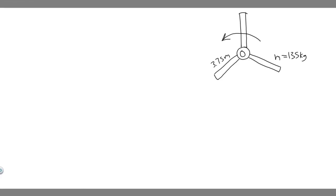In this problem, we're told a helicopter rotor blade can be considered a long, thin rod, as shown in this figure. Part A: if each of the three rotor helicopter blades is 3.75 meters long and has a mass of 135 kilograms, calculate the moment of inertia of the three rotor blades about the axis of rotation. Part B: how much torque must the motor apply to bring the blades from rest up to a speed of 5 revolutions per second in 8 seconds?